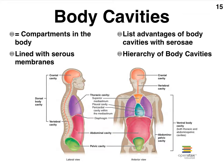It wouldn't be a good thing if, when you start jumping up and down playing basketball, your heart suddenly ended up way down in your pubic area. We want our organs to stay where they function most optimally. The other advantage of having these serous membranes is to make it harder for pathogens — a pathogen is a disease-creating organism — to cross from organ to organ.